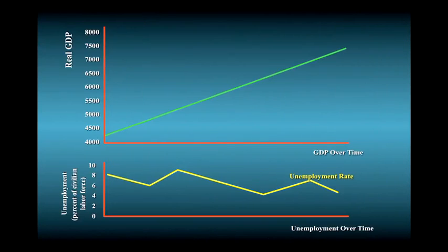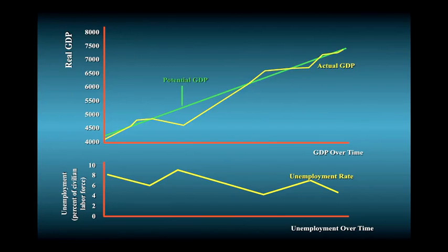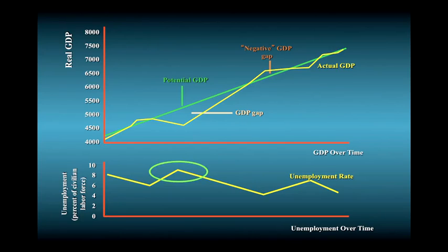This figure illustrates the relationship between actual and potential GDP and the unemployment rate. In the top portion of the figure, the difference between potential GDP and actual GDP is the GDP gap. This GDP gap measures the output the economy sacrifices because it fails to fully use its productive potential. A high unemployment rate corresponds to a large GDP gap.